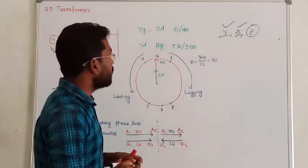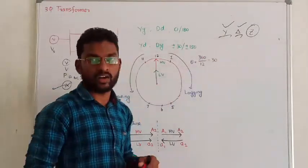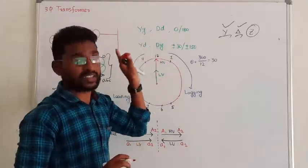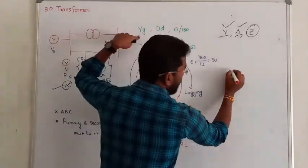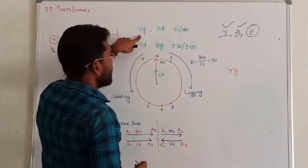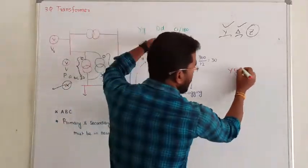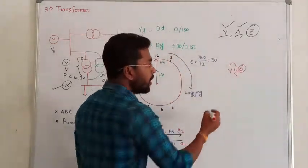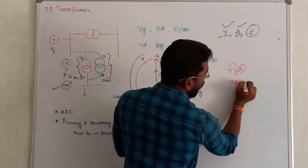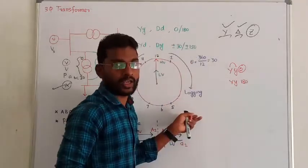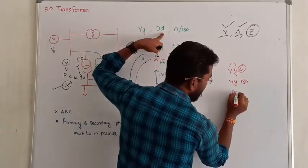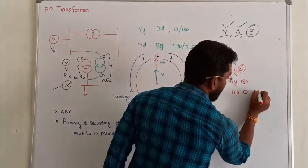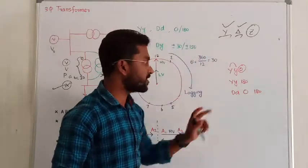Let us see what combinations are available between star and delta. First, you can have star-star, where primary and secondary are both star. The phase difference between them is either zero degree or 180 degree. Similarly, delta-delta also gives two combinations: it might be zero degree or 180 degree phase shift.